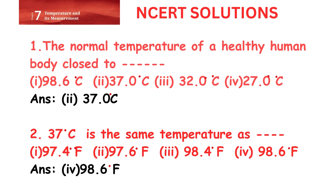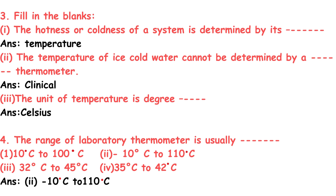Question 3: Fill in the blanks. First, the hotness or coldness of a system is determined by its — answer: temperature. Second, the temperature of ice cold water cannot be determined by a — answer: clinical thermometer.